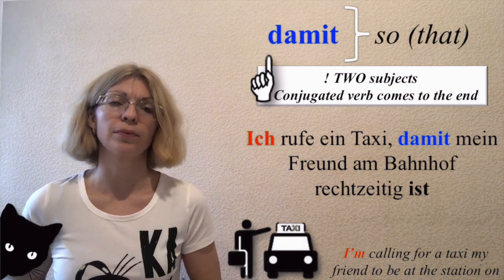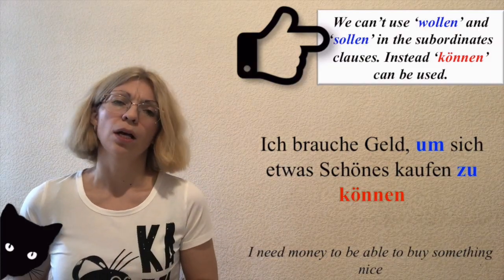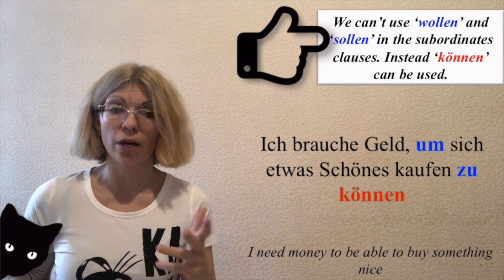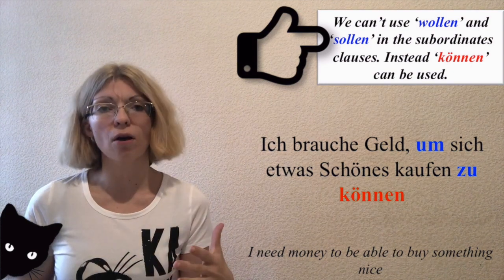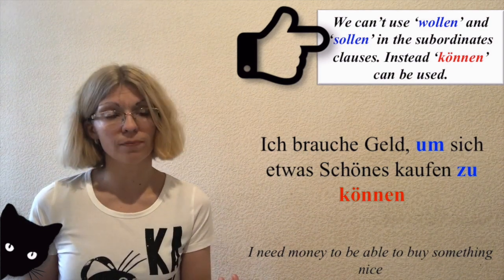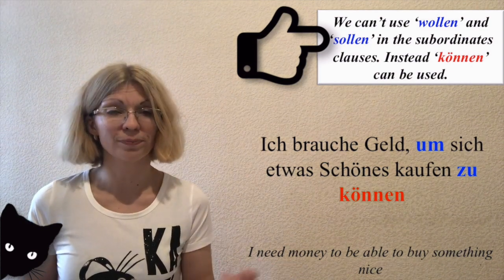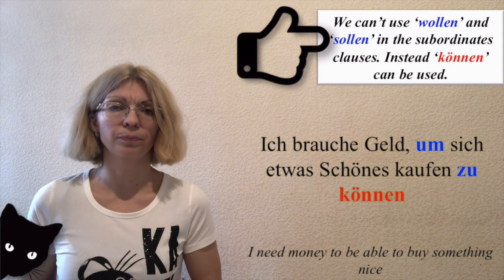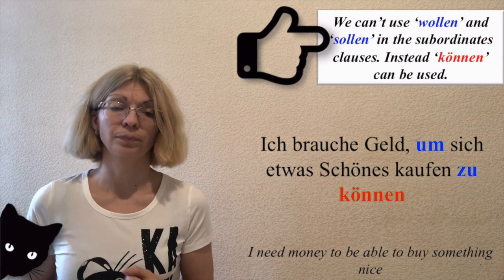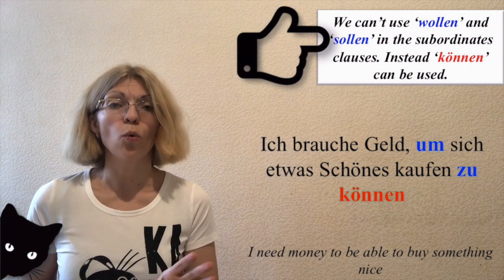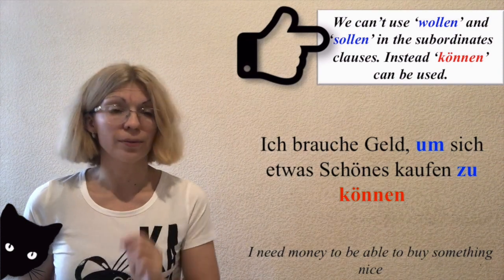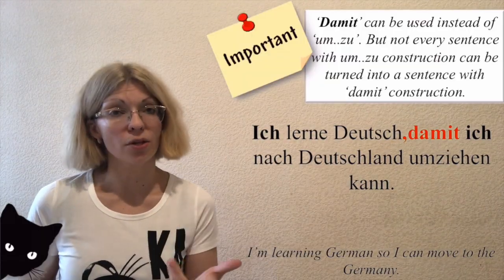The second important thing is modal verbs like 'wollen' and 'sollen'. They are used to express the idea of purpose as well, but we cannot use them in subordinated clauses. Instead, we use 'können'. This is a strict rule of German. Example: 'I need money to be able to buy something nice.'